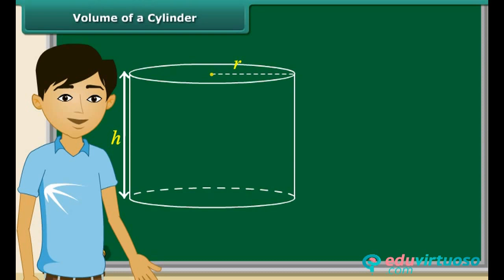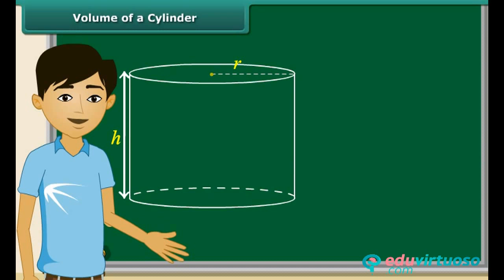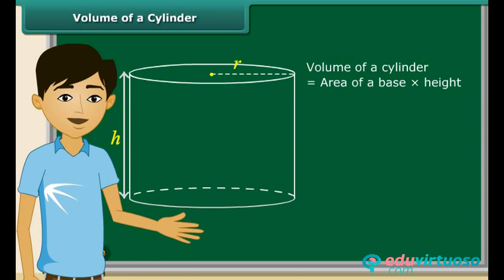Now we will calculate the volume of this cylinder. This cylinder has radius r and height h. For calculating volume, we multiply the area of the base by the height. So the volume of a cylinder is equal to pi r square h.